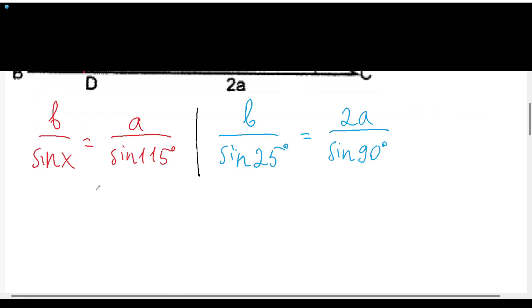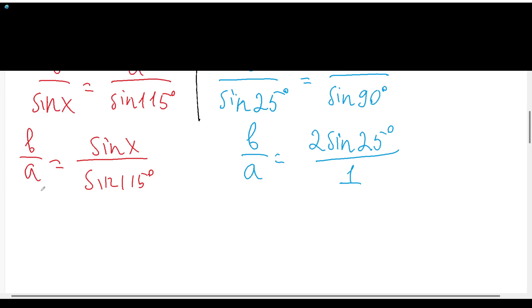And here we can find out from both of the equations B over A. So B over A from the first one will be sin(X) over sin(115°), and here B over A will be equal to 2 times sin(25°) over 1.